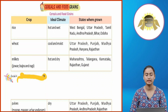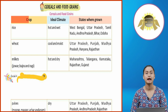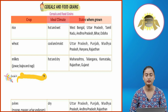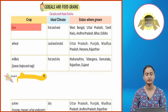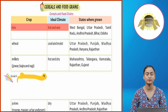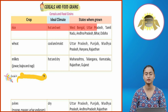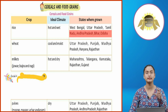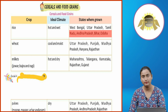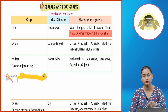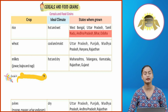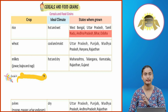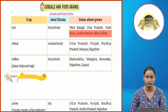Cereals and food grains — the table shows the crop, its ideal climate, and the states where it is grown. Rice grows in a hot and wet climate, mainly in West Bengal, Uttar Pradesh, Tamil Nadu, Andhra Pradesh, Bihar, and Odisha.